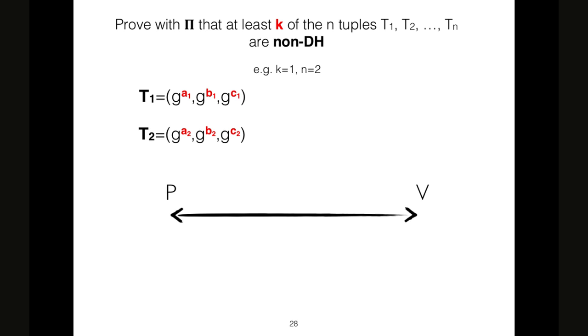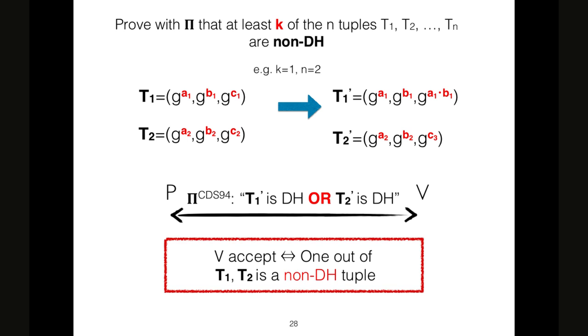How can we construct this? As before, I made an example with K equals 1 and N equals 2. So we have only two tuples. The first thing that the prover does is modify the third element of each tuple to obtain T1' that is DH and T2' that is still non-DH. And at this point, the prover runs CDS94 to prove that T1' is DH or T2' is DH. And this protocol ends with the observation that we accept if and only if one out of two of the starting tuples is a non-DH.